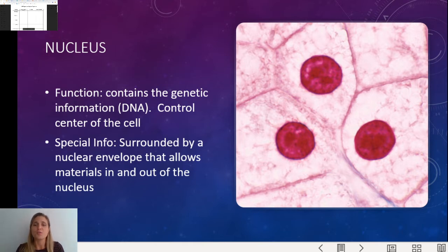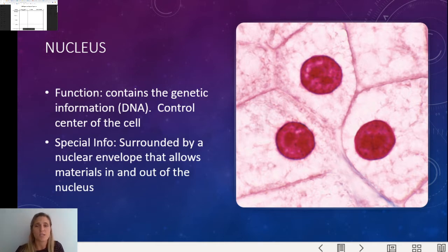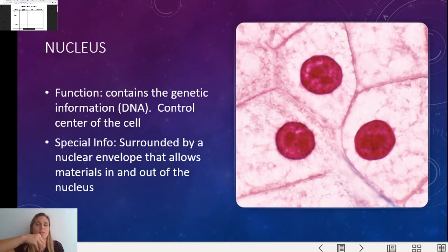Your next organelle is the nucleus. The nucleus contains the genetic information, or the DNA, for the cell — this is basically where you become you. The nucleus is where your genes live, your DNA lives, and your chromosomes are. It's basically the control center and has all the information necessary for life. Special about the nucleus: it's surrounded by a nuclear envelope, which is like a cell membrane but specifically around the nucleus, helping things come in and go out and keeping certain things in and certain things out.